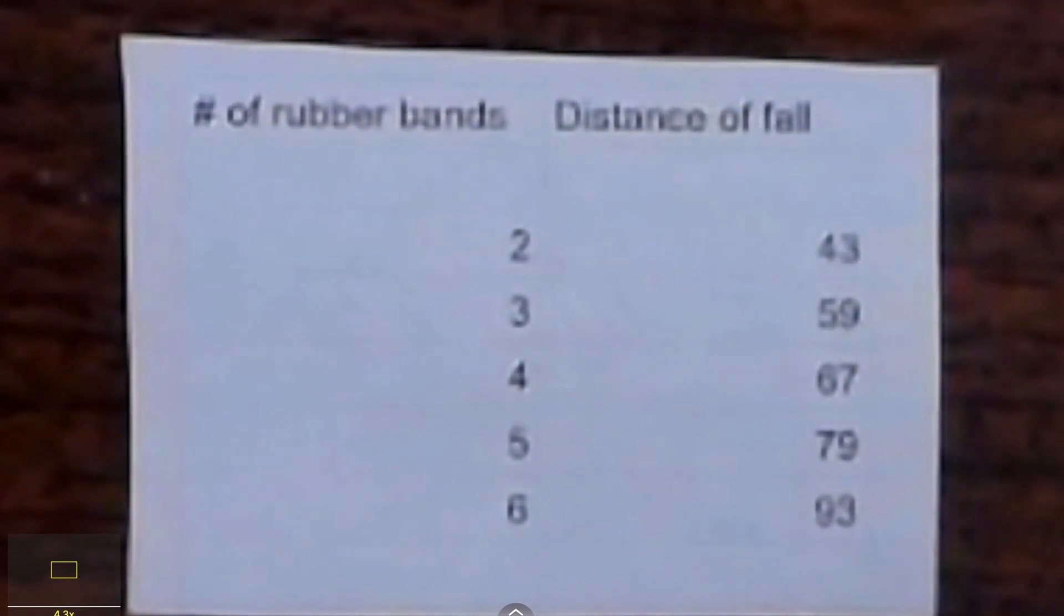They actually do the slope intercept formula math part in math class with the math teacher. They then bring their results from that equation back to science class, and we have a test their hypothesis day where we actually take the number of rubber bands and test and see how far Barbie does fall.